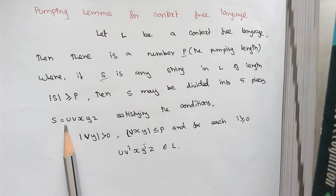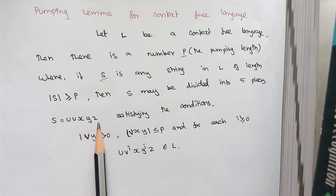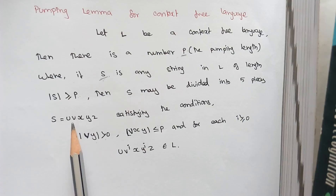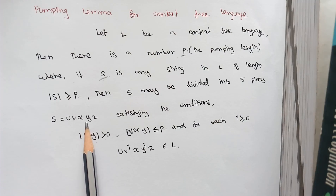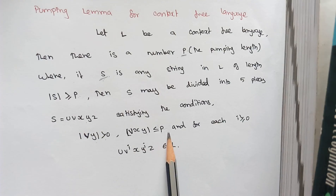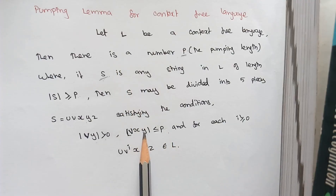S is divided into U, V, X, Y, and Z. Where the length of V and Y is greater than 0 — so some value must exist for the V and Y portions. Also, the remaining length of VXY is less than or equal to P.